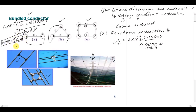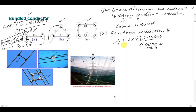Comparing the GMR of the bundle conductor with a single conductor: for a single conductor, GMR = Ds = r·e^(−1/4). It is evident from these two equations that the GMR of a bundled conductor is greater than that of a single conductor per phase. So if GMR is increased, inductance is reduced; if inductance is reduced, XL is reduced. If the reactance of the transmission line is reduced, the losses are reduced. This is the second advantage of using bundle conductors.